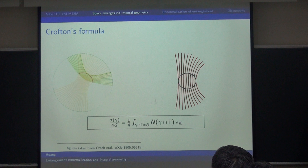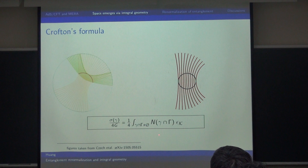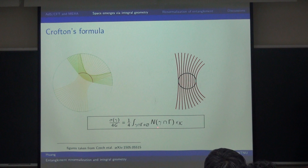The main formula we are going to use is the so-called Crofton formula. It says that the area or length of some geometric object can be expressed in the form of an integral over some reference object. In the simplest example of AdS-3, or to be precise, a static slice of AdS-3, the length of some generic curve gamma is given by an integral over the geodesic, the big gamma that hits this little gamma. The n is the intersection number, and to do this integral we need some measure for the number density of these geodesics.